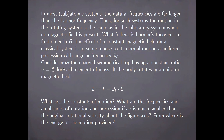With this in mind, we can look at the problem of the charged symmetrical top having a constant ratio gamma given by Q over M for each element of mass. If the body rotates in a uniform magnetic field, then its Lagrangian will be given by the kinetic energy minus the dot product between the Larmor frequency and the angular momentum. We would like to find the constants of motion, the frequencies and amplitudes of nutation and precession, in the particular case where the Larmor frequency is much smaller than the original spin velocity about the figure axis of the top, and we would also like to see from where the energy for these additional forms of motion is provided.